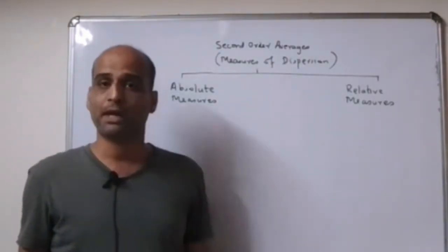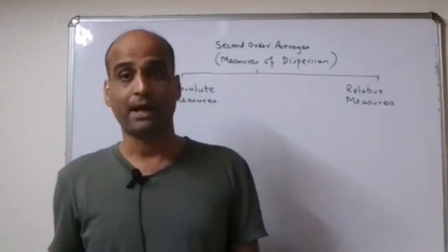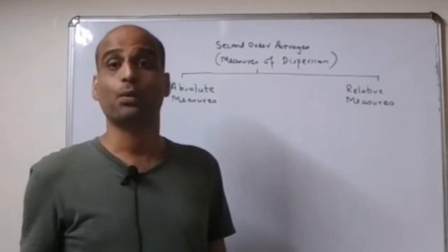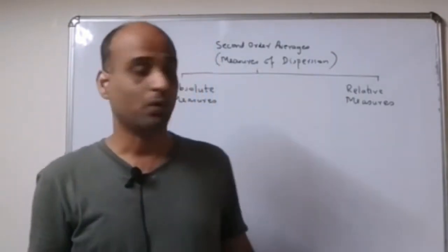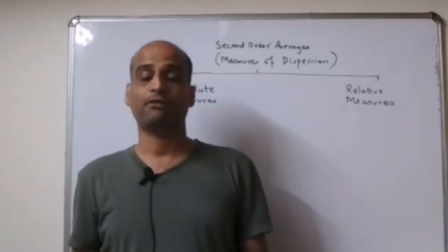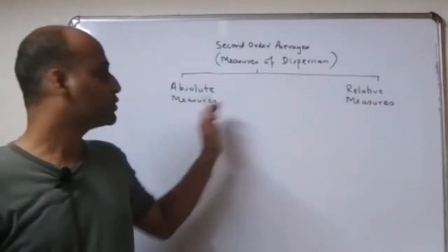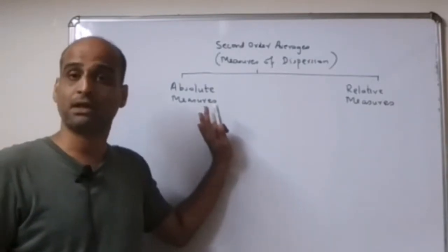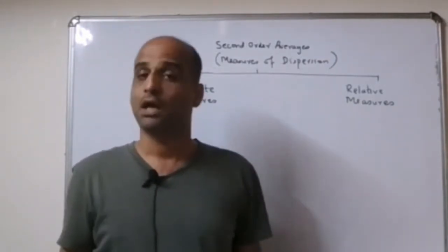There is one more difference. Absolute measures are used when we want to compare two or more series that have the same units. Relative measures are unit-free, so they are used when two or more series have different units and we want to make a comparison between them.